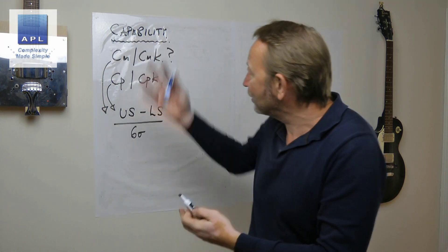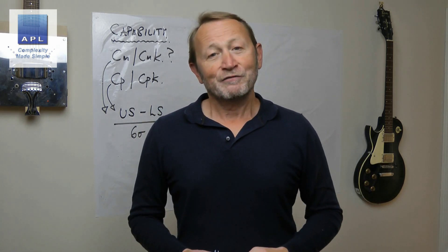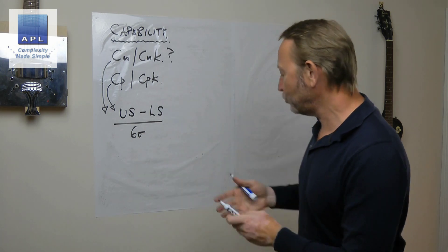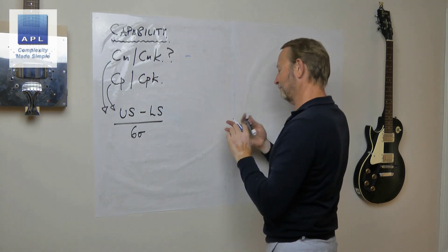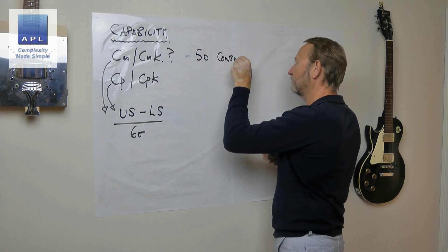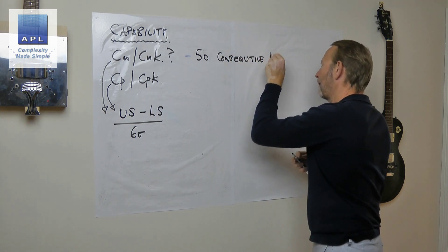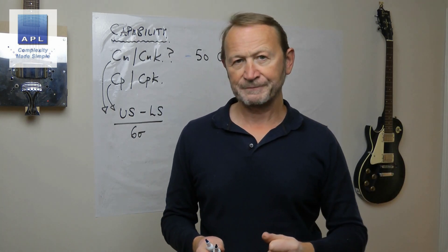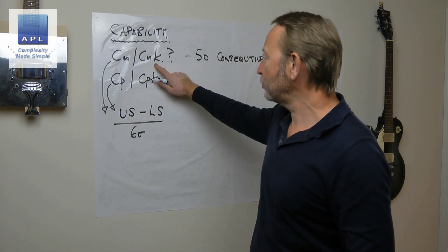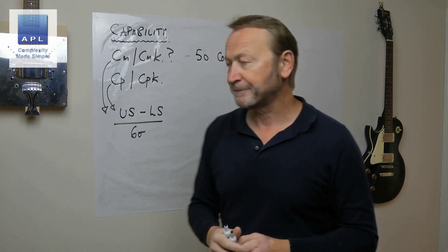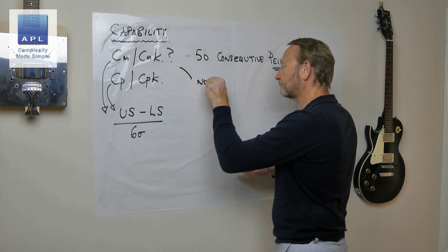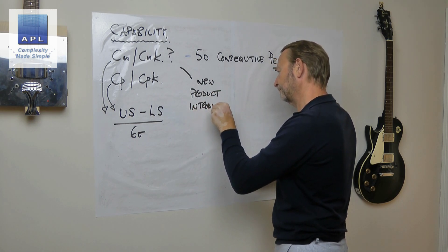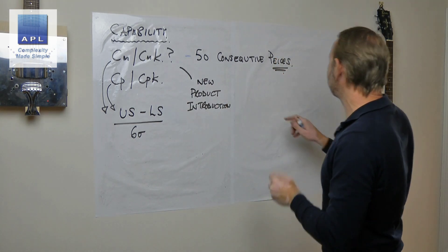So what's the difference? Why have we got CM versus CP? The difference between these two is simply about the data. CM uses 50 consecutive pieces. A great thing to do, by the way, is to keep them in order. This is probably my favorite capability study - you do this at new product introduction, and you simply make 50 consecutive pieces.